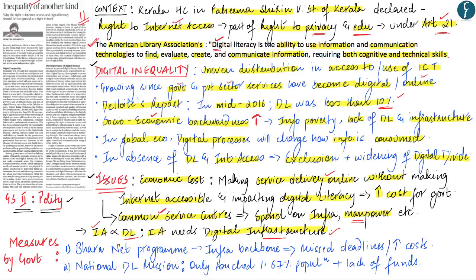For example, the government launched the BharatNet program which aims to provide optical fiber network in all Gram Panchayats, as this optical fiber network will act as the infrastructure backbone to India's digital mission. However, BharatNet has been continuously missing its deadlines and the costs involved in its installation are increasing. The second initiative mentioned is the National Digital Literacy Mission, which has only touched just 1.67 percent of the population and is also struggling with a lack of funds. Therefore, despite government initiatives, these are unable to bridge the gap of digital inequality.